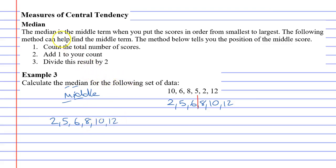And the method involves counting the total number of scores, so we have 6 scores here. Adding 1 to your count, so 6 plus 1, which is 7. And dividing this result by 2. 7 divide 2 is 3.5. And when you do this,